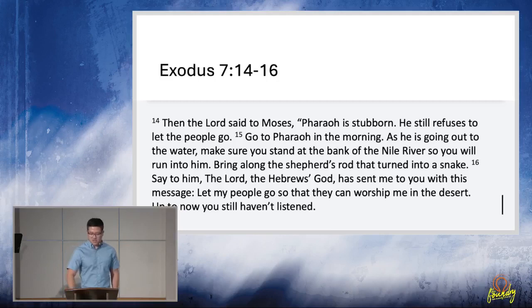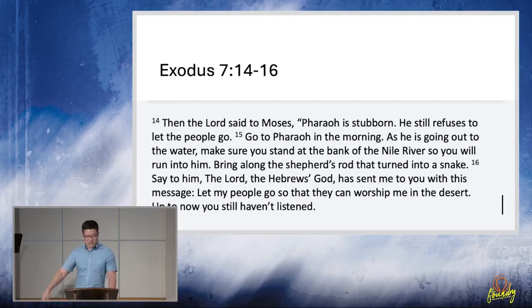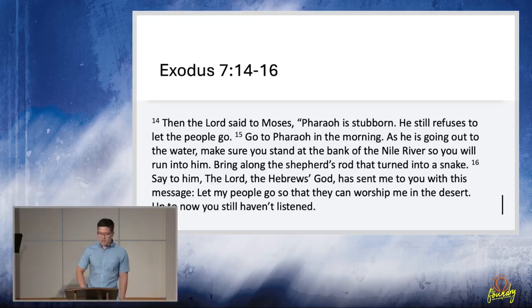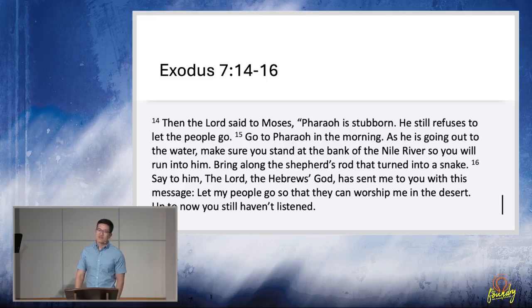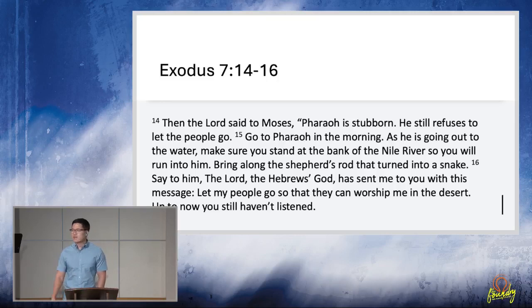And I'm going to repeat it to you. In Exodus chapter 7, verse 14 through 16, it says, Then the Lord said to Moses, Pharaoh is stubborn. He still refuses to let the people go. Go to Pharaoh in the morning. As he's going out to the water, make sure you stand at the bank of the Nile River so you will run into him. Bring along the shepherd's rod that turned into a snake. Say to him, Lord, the Hebrews, God has sent me to you with this message. Let my people go. Good job. Let my people go so that they can worship me in the desert. So they can worship me in the desert. Up to now, you still haven't listened. So he's going to repeat that until he finally does listen.